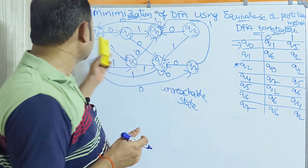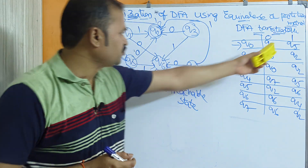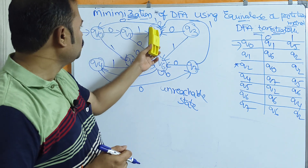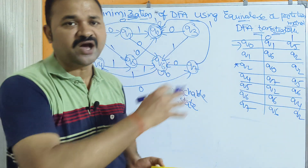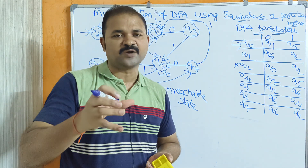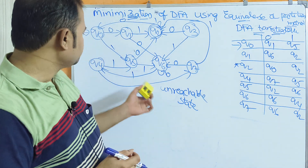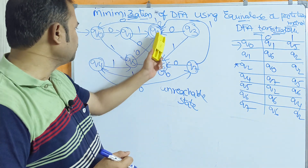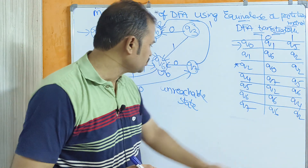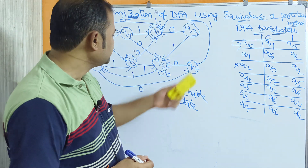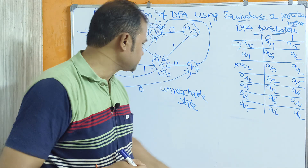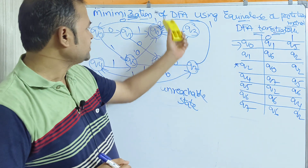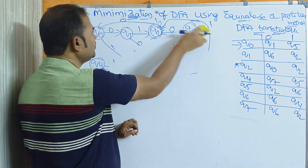Q0 on 0 goes to Q1, Q0 on 1 goes to Q5. Q1 on 0 goes to Q6, Q1 on 1 goes to Q2. Q2 on 0 goes to Q0, Q2 on 1 goes to Q2. We don't have Q3 because it is an unreachable state. Q4 on 0 goes to Q7, Q4 on 1 goes to Q5. Q5 on 0 goes to Q2, Q5 on 1 goes to Q6. Q6 on 0 goes to Q6, Q6 on 1 goes to Q4. Q7 on 0 goes to Q6, Q7 on 1 goes to Q2.